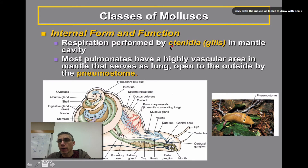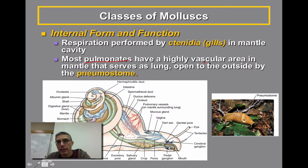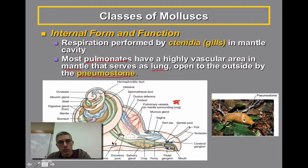Respiration is going to be performed primarily by ctenidia or gills found in the mantle cavity — but this is only for those species that are aquatic. The ones you guys are looking at in class belong to a group called the pulmonates, because they have a very highly vascular area found within the mantle of the animal. You can see this vascular area in this representation of the snail. It's going to serve as the lung of the animal, opening to the outside by the pneumostome. You can clearly see the pneumostome represented in this slug, this terrestrial type of gastropod.